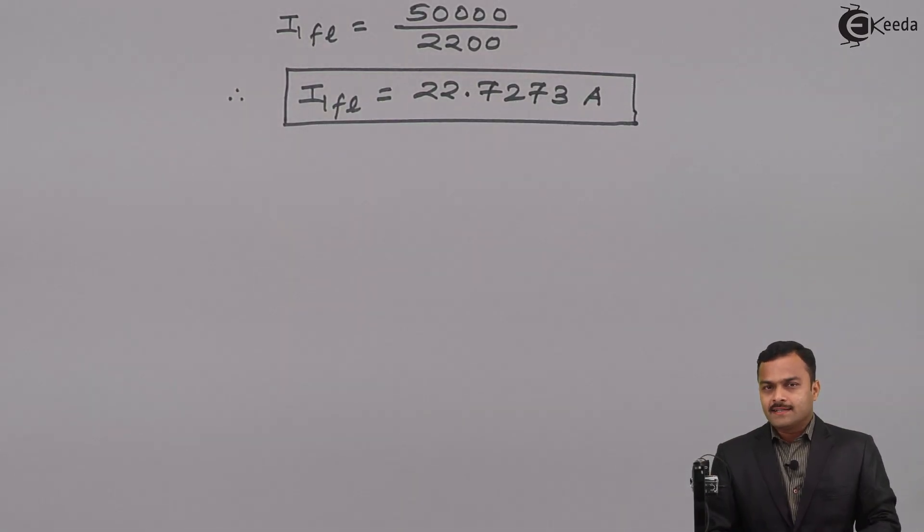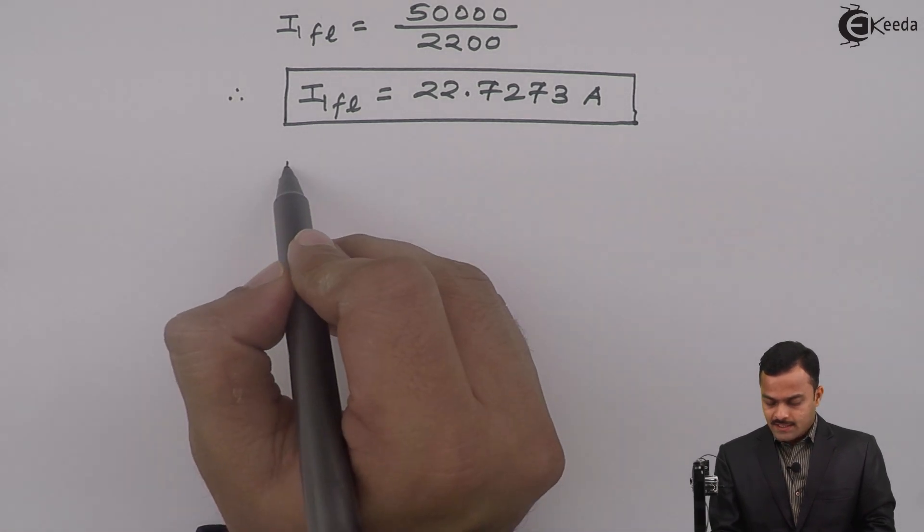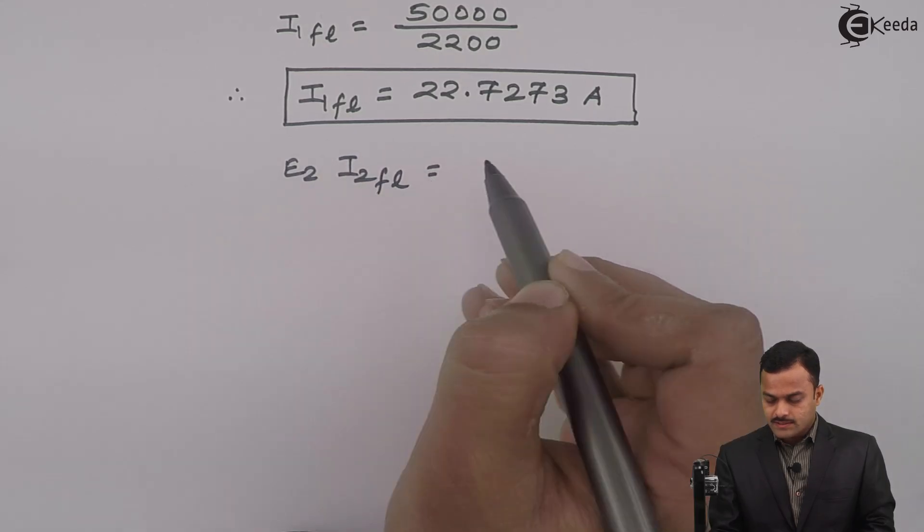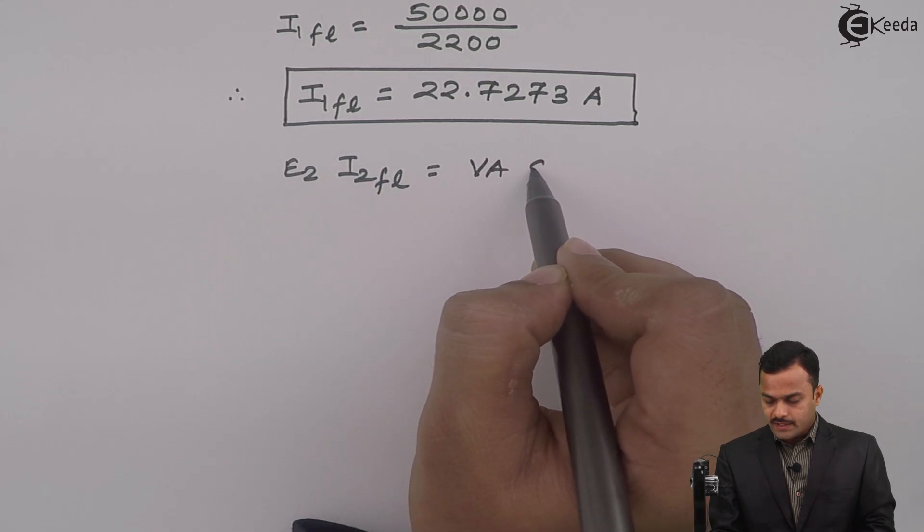We can observe that kVA rating of a transformer from the primary side as well as secondary side is same. Now we can say E₂ × I₂FL is nothing but VA of a transformer.